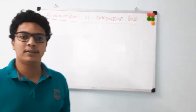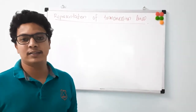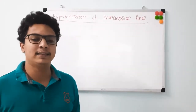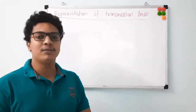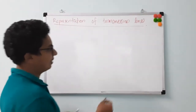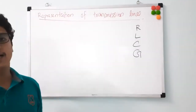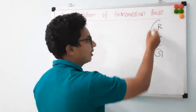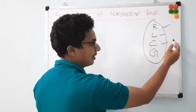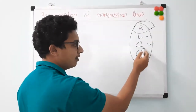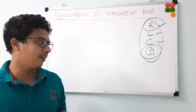Till now, we were learning about transmission line parameters. We learned how to calculate resistance, inductance, and capacitance for different configurations of transmission lines. These are the four parameters of transmission lines: resistance, inductance, capacitance, and conductance. We have seen how to derive them and how they affect the transmission line. Resistance, inductance, and capacitance we have deeply covered, and conductance will not make much effect in our consideration.